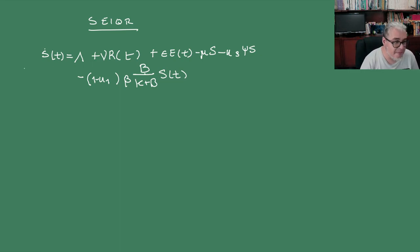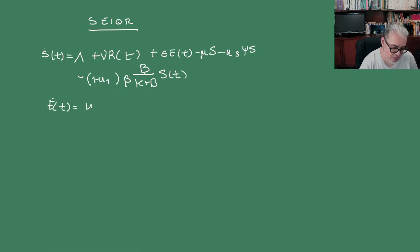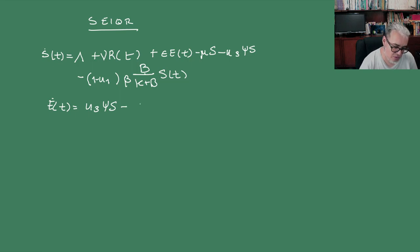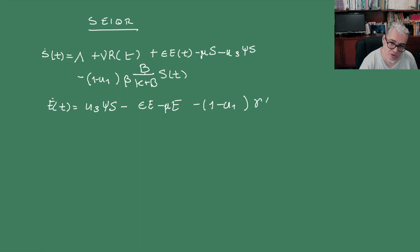Luego tenemos E punto, que son los expuestos. Van a ser U3 por phi(S) — estos son los que son expuestos — menos epsilon por los expuestos, que son los que vuelven a ser susceptibles, menos los que se mueren de causas naturales, menos los que estando expuestos se van a ir a ser infecciosos.